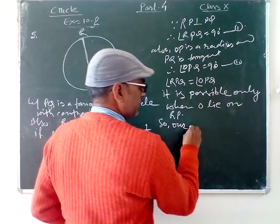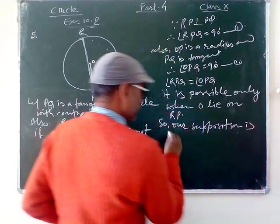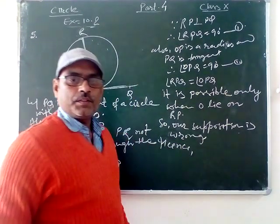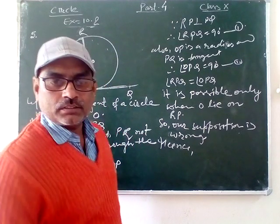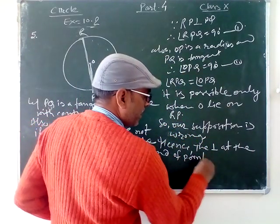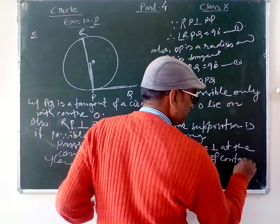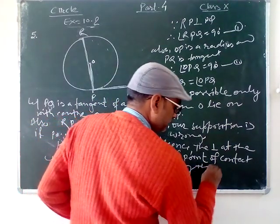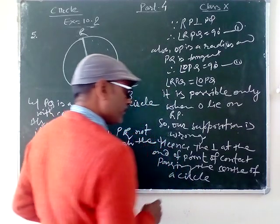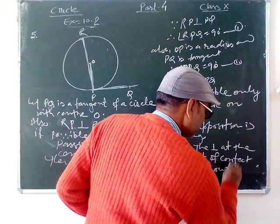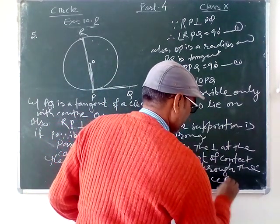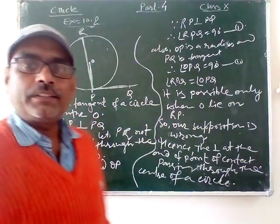It is possible only when O lies on RP. So our assumption is wrong. Hence, the perpendicular at the end of the point of contact passes through the center of a circle. This is the proof.